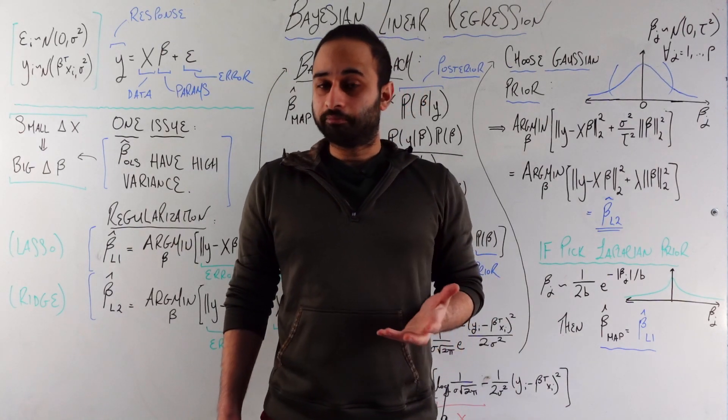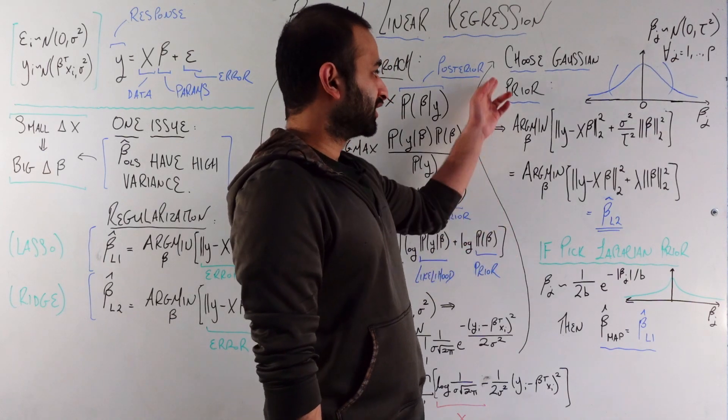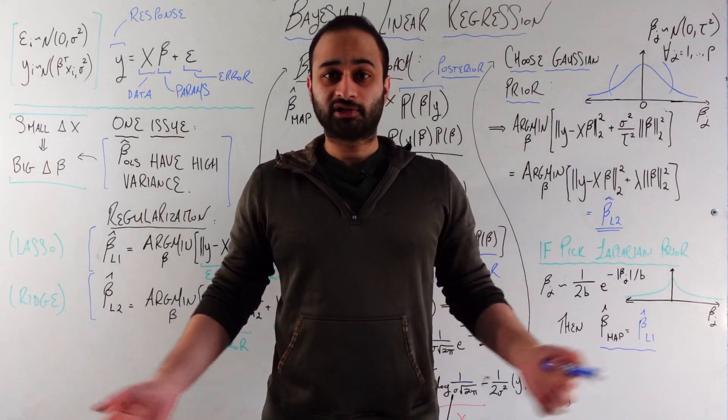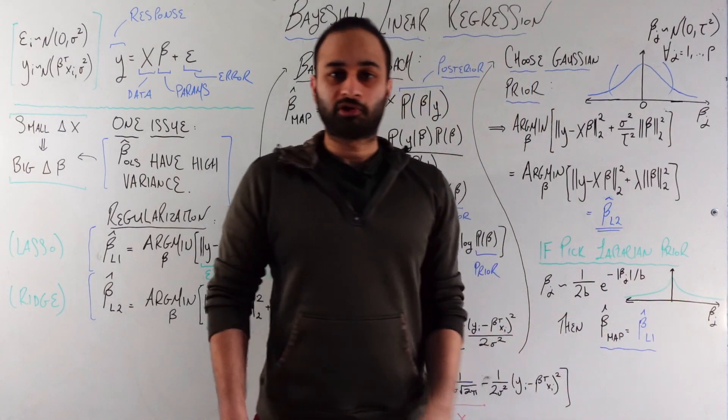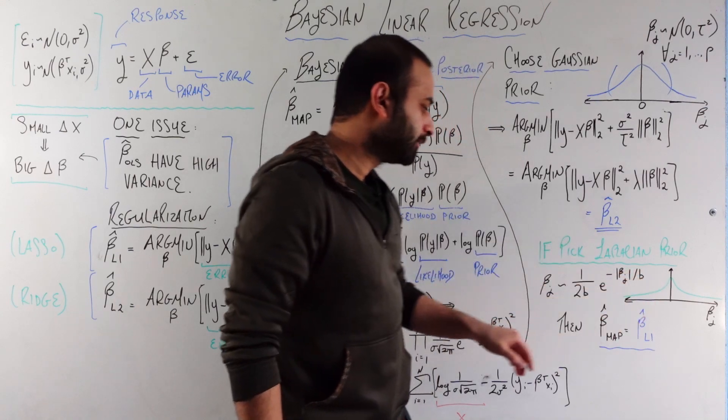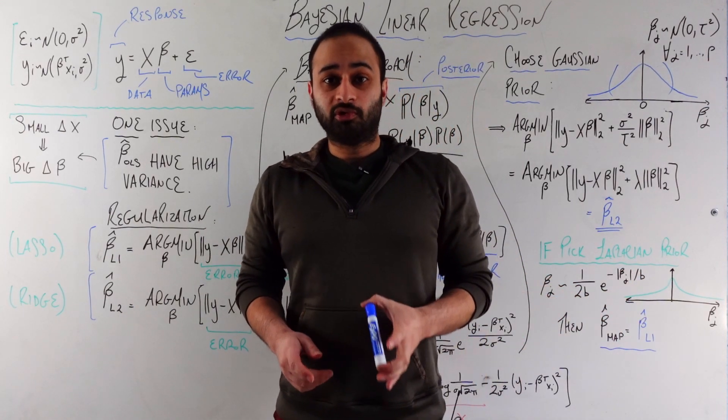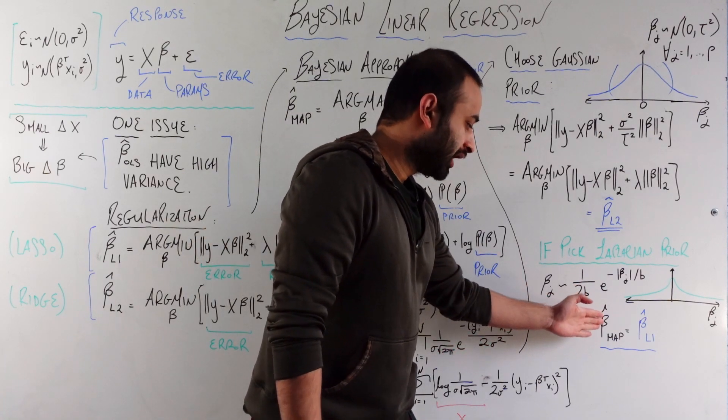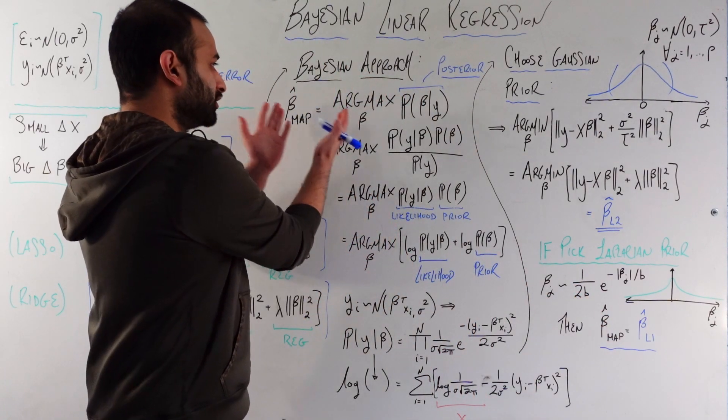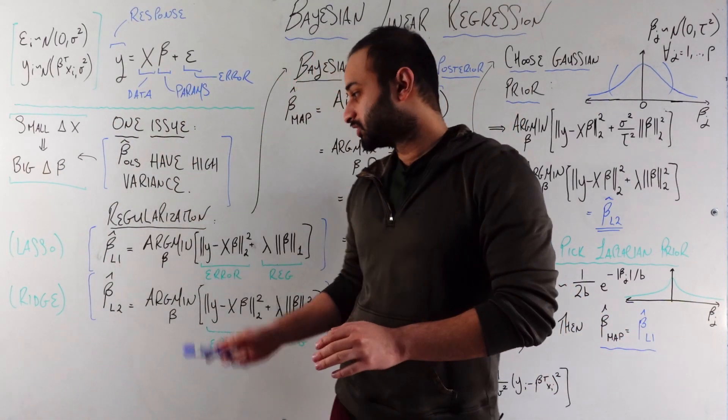If you're wondering about the lasso problem, there's actually a nice analog there too. It's just that we need to pick a different prior. Here we picked a Gaussian prior for the betas. If we pick a Laplacian prior for the betas, a Laplacian distribution looks like this, which looks kind of like a Gaussian distribution, but it has that peak, that point at the top instead. It has a PDF that looks like that. If we use that as our prior distribution instead, then we get beta MAP, which is the maximum a posteriori solution, which comes from the Bayesian approach, is exactly the same solution as the L1 approach, the lasso approach.